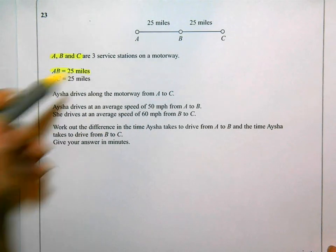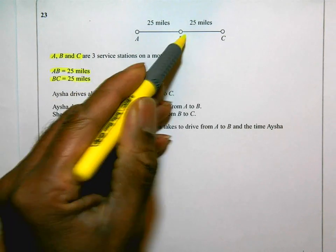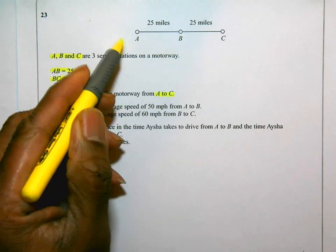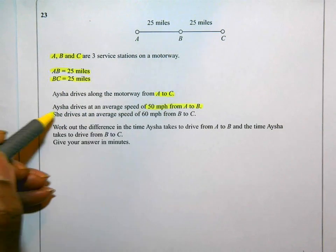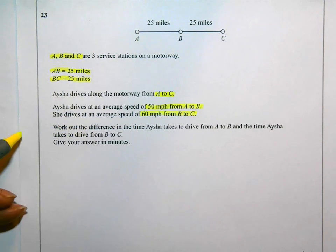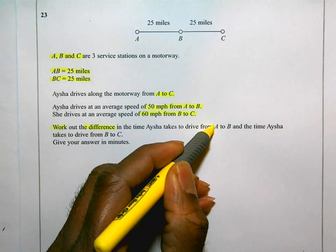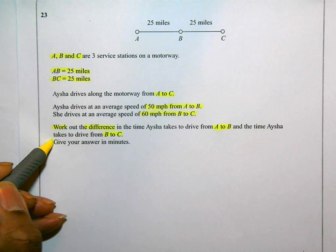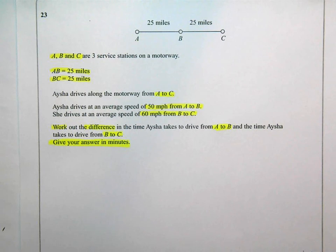AB is 25 miles, as shown on the diagram, and BC is also 25 miles. Ayesha drives along the motorway from A to C. She drives at an average speed of 50 miles per hour from A to B, and at an average speed of 60 miles per hour from B to C. We need to work out the difference in the time Ayesha takes to drive from A to B and the time she takes to drive from B to C. Importantly, we need to give the answer in minutes.